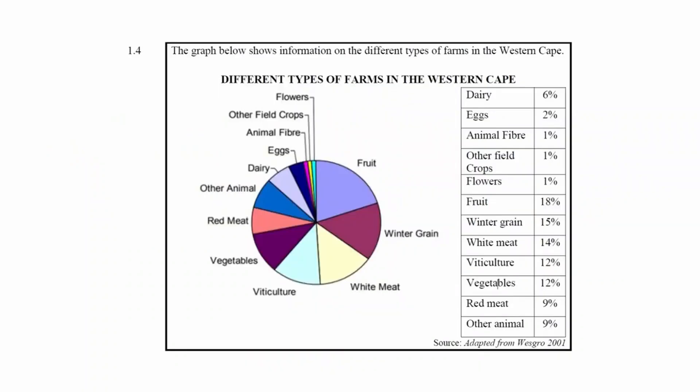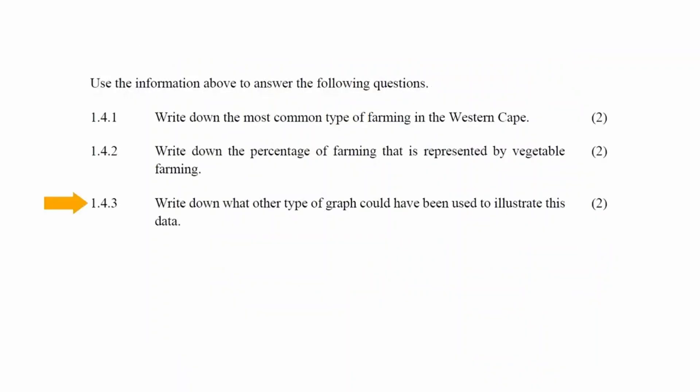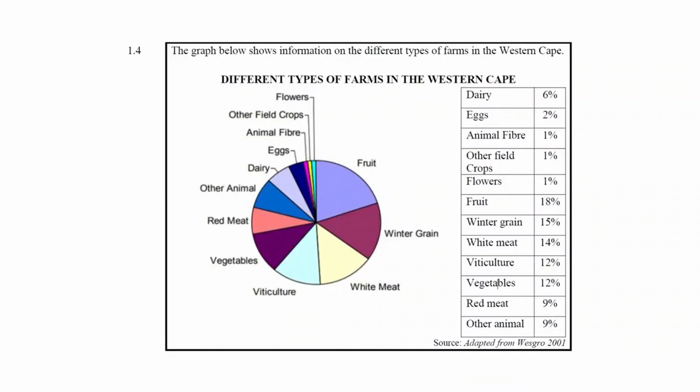From the table, the percentage of farming that is represented by vegetable farming is 12 percent. In question 143, you have to write down what other type of graph could be used to illustrate this data.